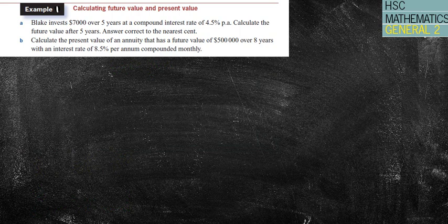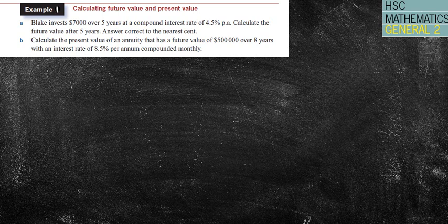Okay, so let's have a look at an example. If you would like to pause this and have a crack at it first, that's up to you. Blake invests $7,000 over five years at a compound interest rate of 4.5% per annum. So I like to highlight things. We're investing $7,000.